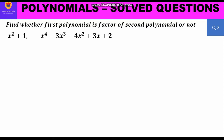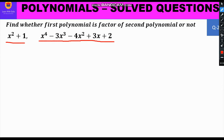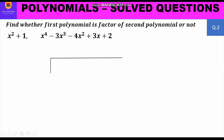Now let us take up question number 2. The first polynomial is x² + 1 and the second polynomial is x⁴ - 3x³ - 4x² + 3x + 2. The first polynomial is the divisor and the second is the dividend. Both are already in standard form, so we set up the problem directly: x² + 1 goes outside and the dividend goes inside.